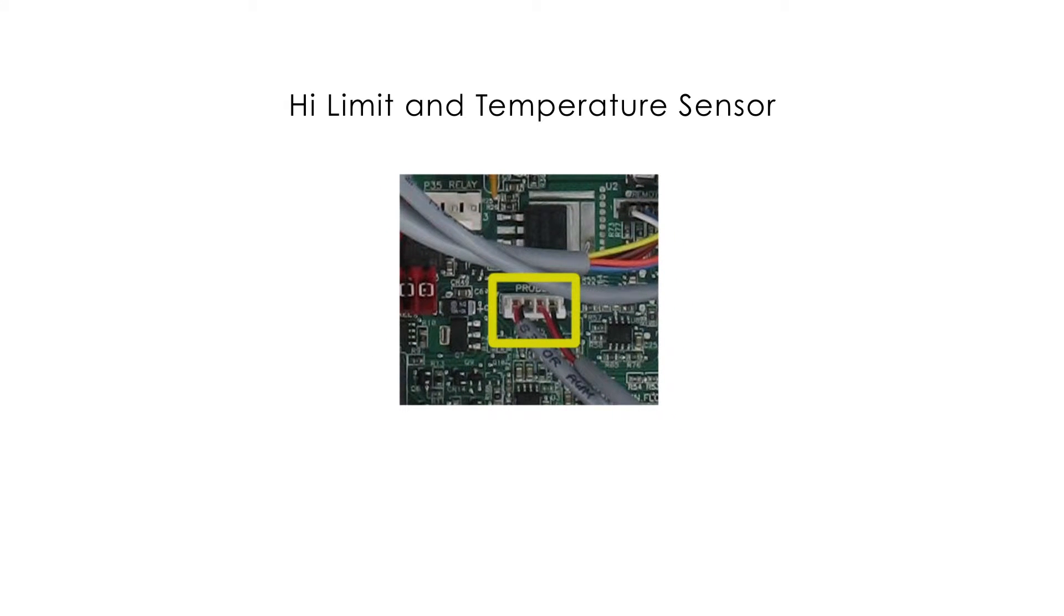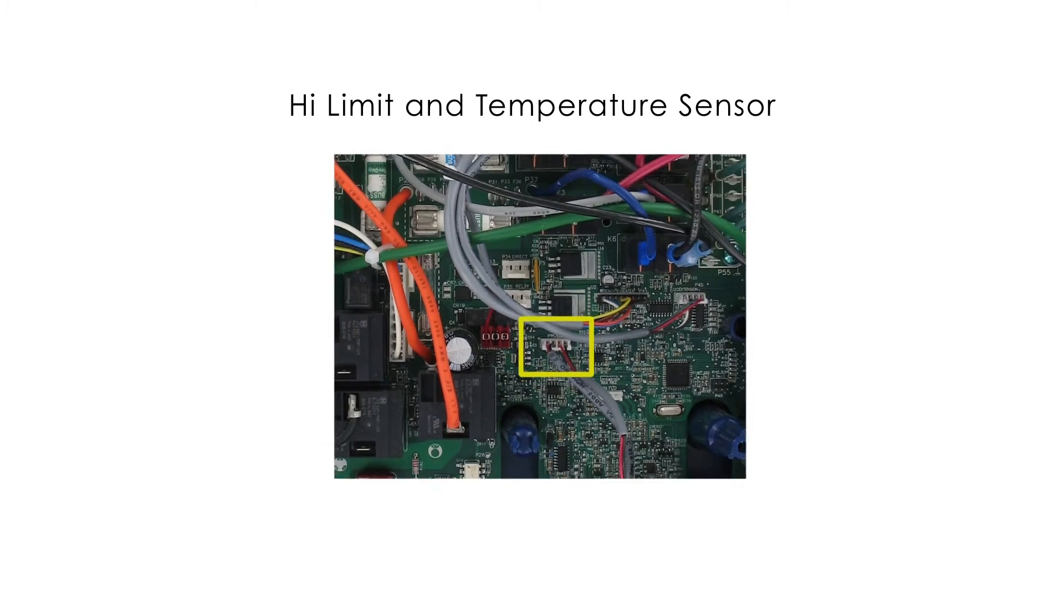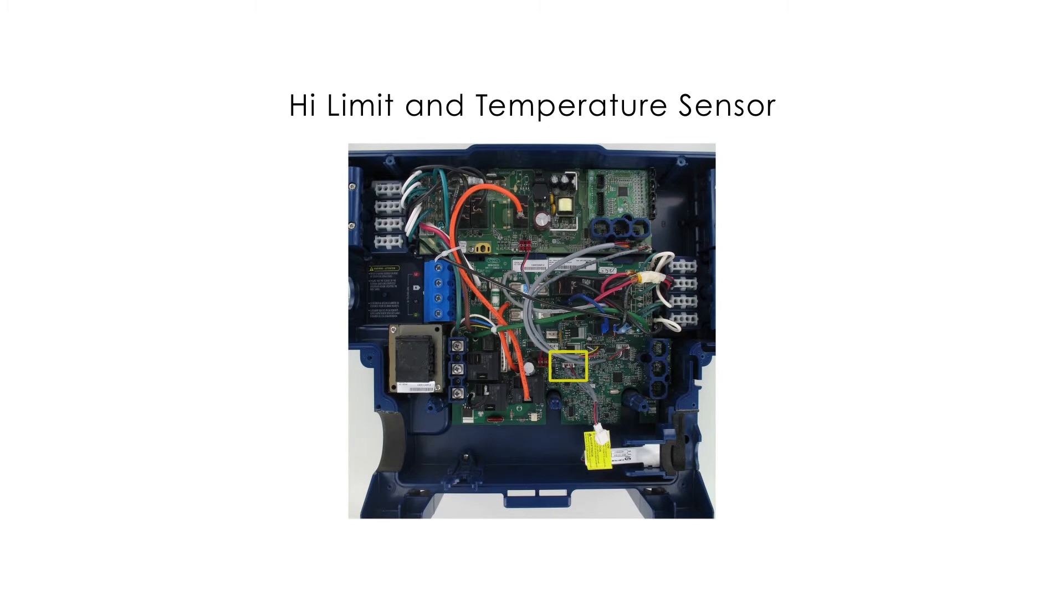The high limit sensor is a protection mechanism and is not in direct contact with the water, but with the actual heater casing. If this sensor detects high temperatures on the heater casing, it will disengage power to the heater, preventing damages to the equipment and protecting the user.